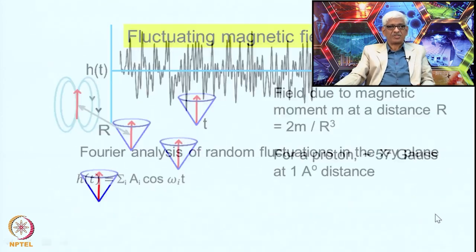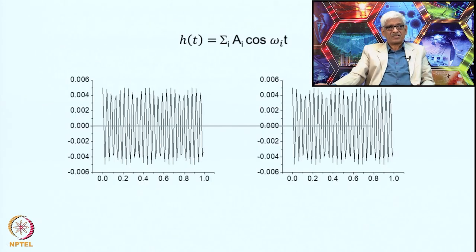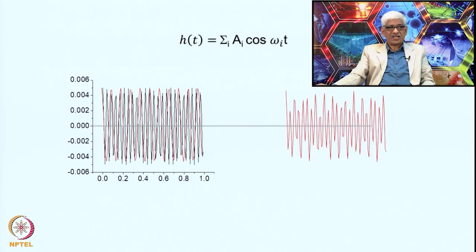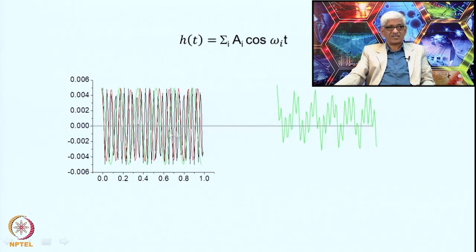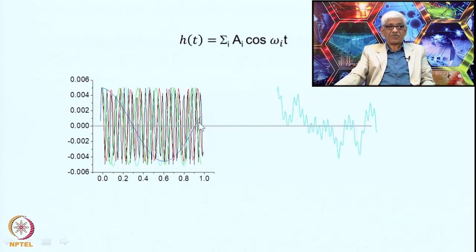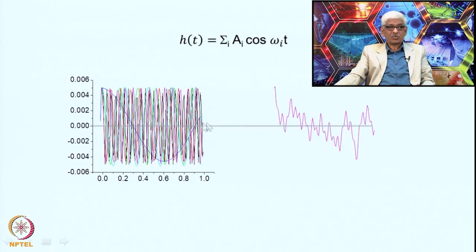Without going into the mathematical details of deriving the full expression, the result for the spectral density is given by: the ensemble average of the fluctuating fields in the xy-plane times 2τc divided by 1 plus ω²τc². Here τc is a time constant called the correlation time, which indicates the correlation between spins as they move in the ensemble — it characterizes the phase memory of the spin system and the time between molecular collisions.